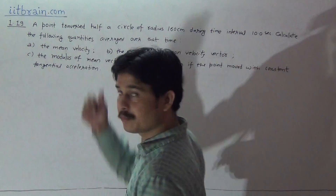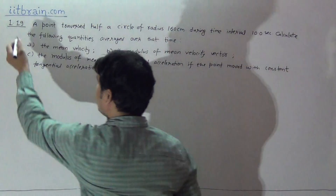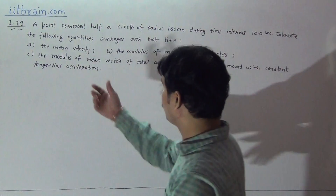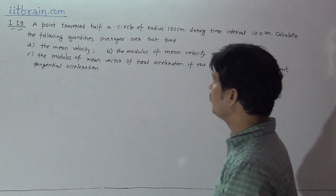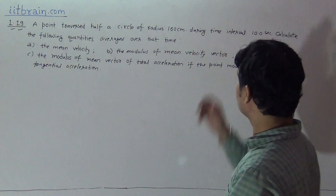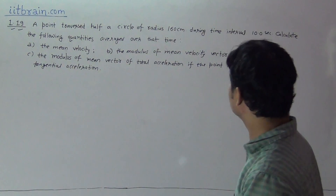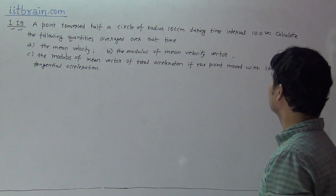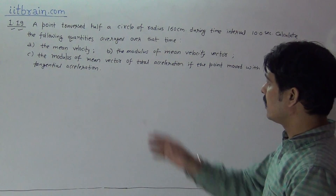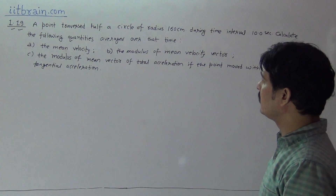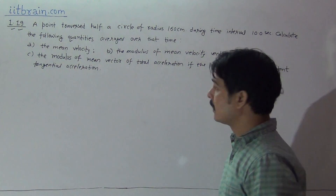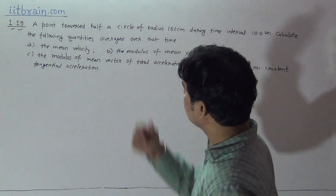Hello students, this is problem 1.19. The problem states: a point traversed half a circle of radius 160 cm during a time interval of 10 seconds. Calculate the following quantities averaged over that time.